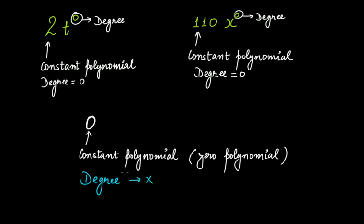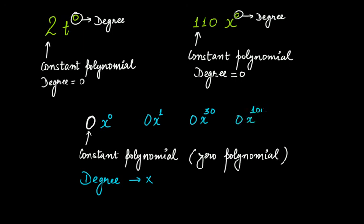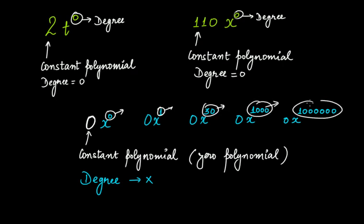Why is its degree not defined? Because we can write this as zero multiplied by x raised to the power of zero, or as zero multiplied by x raised to the power of one — since zero multiplied by anything gives zero. We can write it as zero multiplied by x raised to the power of thousand, or zero multiplied by x raised to the power of 10 lakh, and you'll get zero every time. So the degree could be zero, one, thirty, thousand, or 10 lakh.